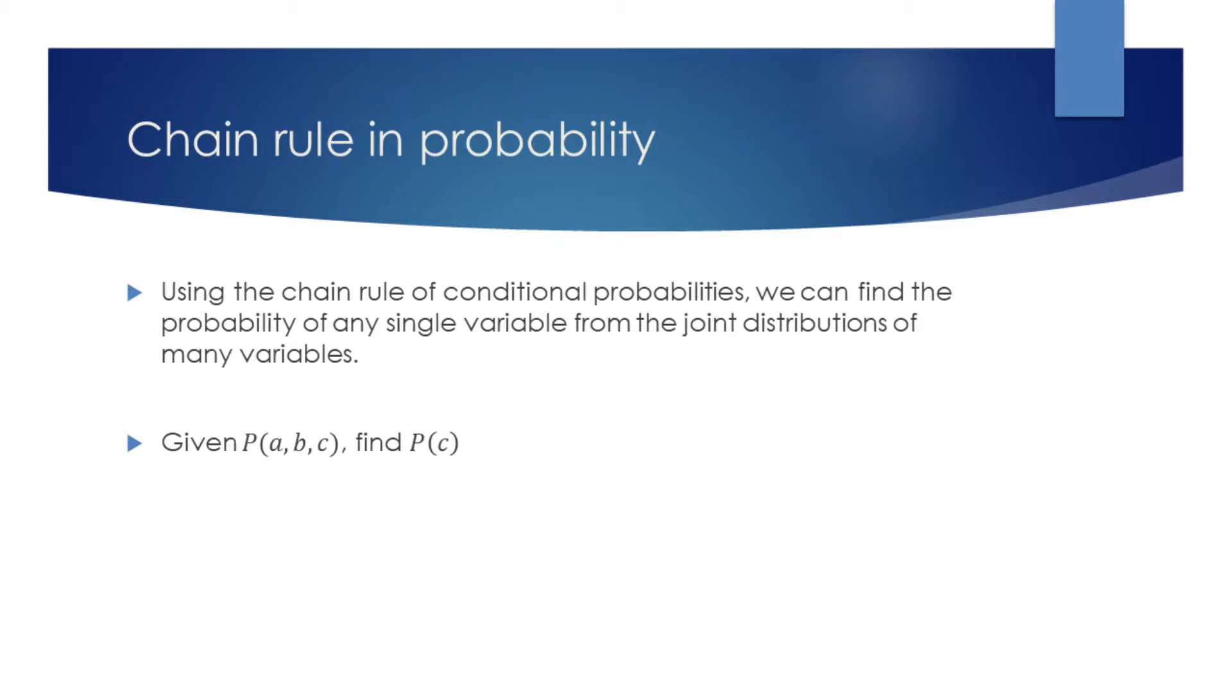Using the chain rule of conditional probabilities, we can find the probability of any single variable from the joint distributions of many variables.